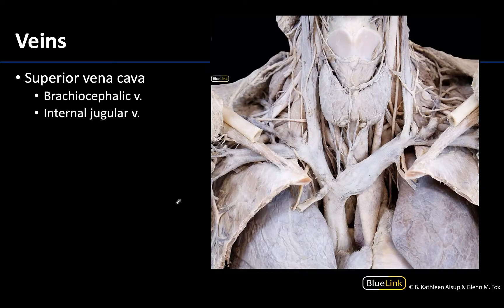Let's get started by identifying the major vein in the anterior neck region, and that is going to be the internal jugular vein. It is typically easiest to see in a dissection of the carotid sheath contents as its lateral-most structure. It drains blood from the venous sinuses that drain the brain.